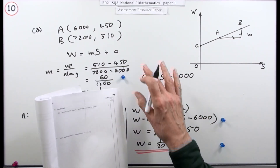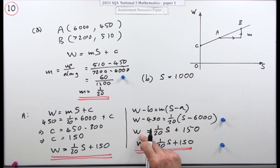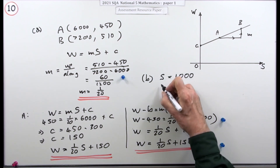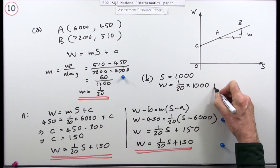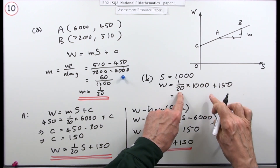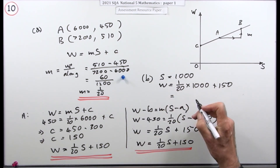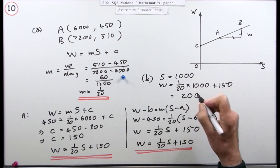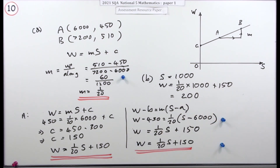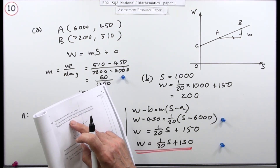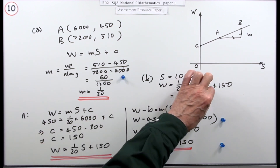Part b: calculate the wage when sales are 1,000. You've got the formula in the form for calculating w, so: w equals one twentieth of 1,000 plus 150. One twentieth of 1,000 is 50, so that's 50 plus 150 equals 200. The question specifies w in pounds, so w is just the number — you'd still get the mark whether or not you include the pound sign.